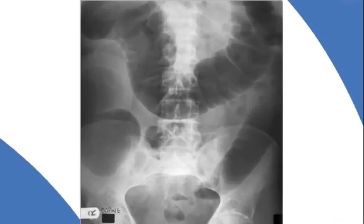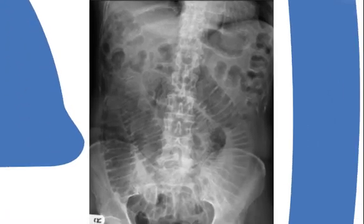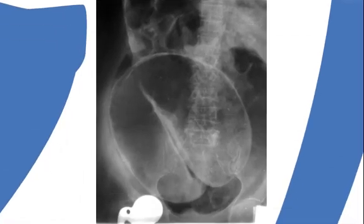An abdominal x-ray is usually required to see where the obstruction is located. This picture shows large bowel obstruction — the clue is that the haustra do not extend all the way across the lumen's width. This x-ray shows small bowel obstruction, where the valvulae conniventes do cross the whole width. And this picture shows sigmoid volvulus; the dilated bowel is often described as a coffee bean.